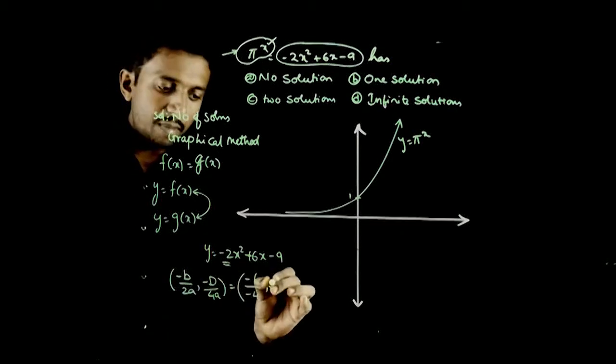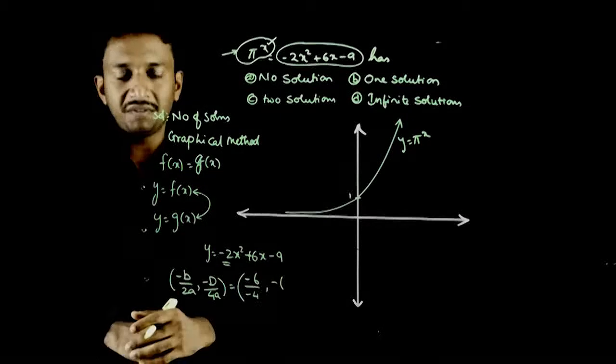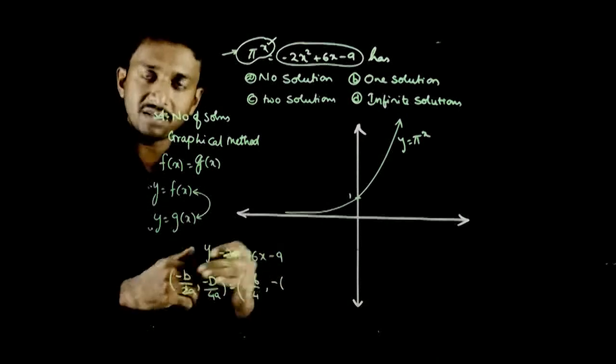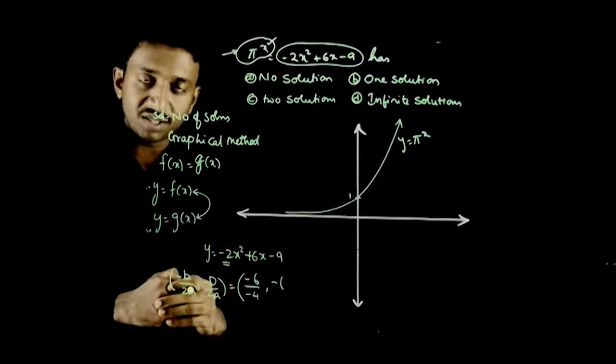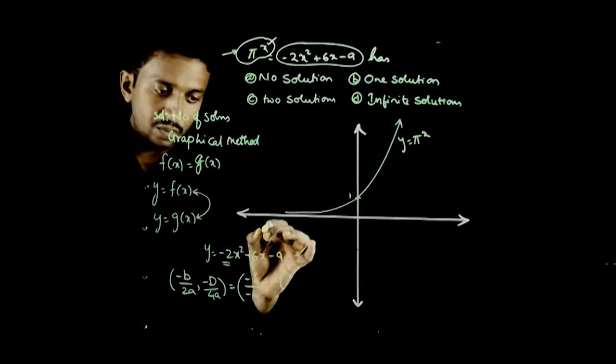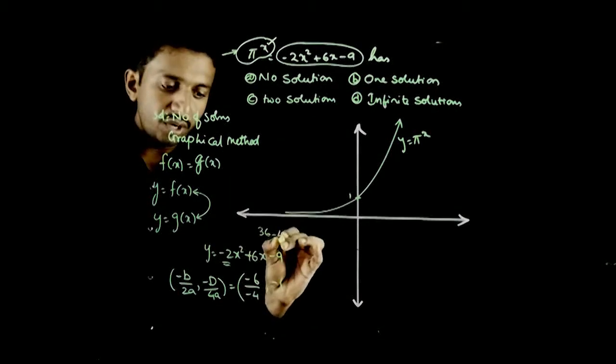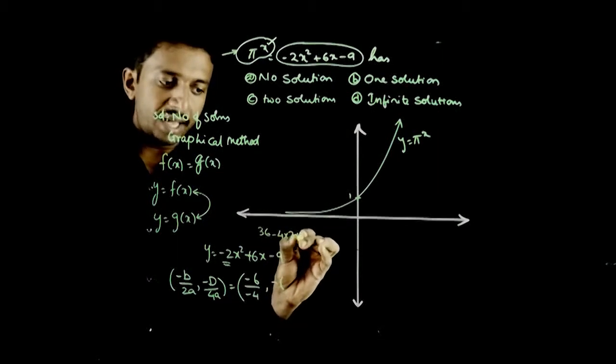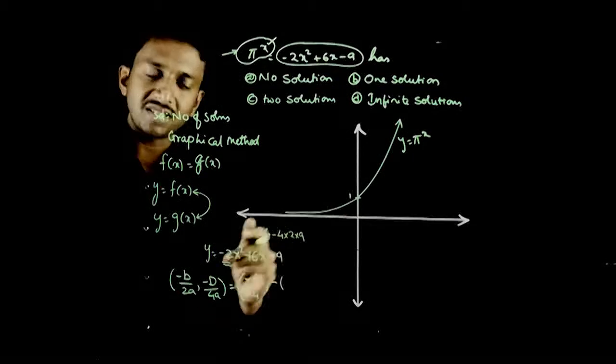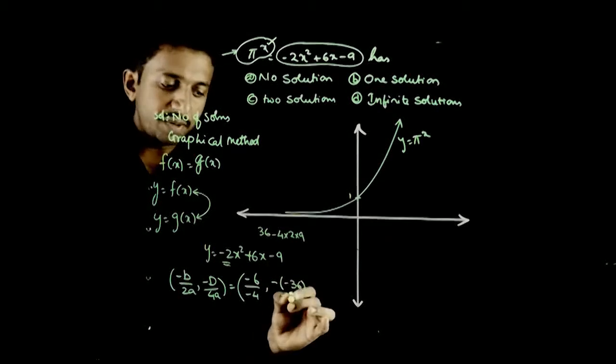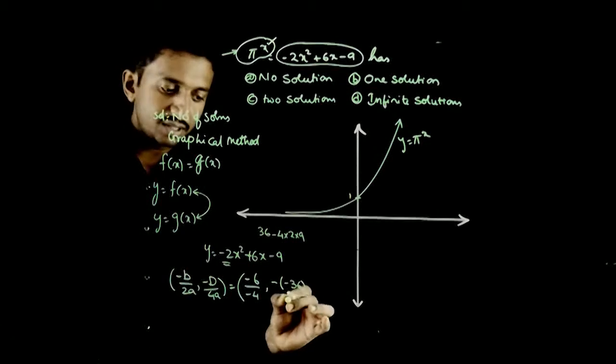...minus of what is the discriminant for this? b² = 36 minus 4ac. 36 minus 4ac. So 36 (b²) minus 4 × 2 × 9. 36 minus 72 is -36.